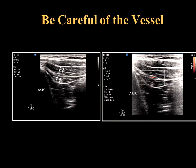Without Doppler you can see external oblique, internal oblique, transverse abdominus, iliacus, and peritoneum, and a structure that you might consider to be nerves. Once you apply the Doppler function, you can see that structure is actually the deep circumflex iliac artery.